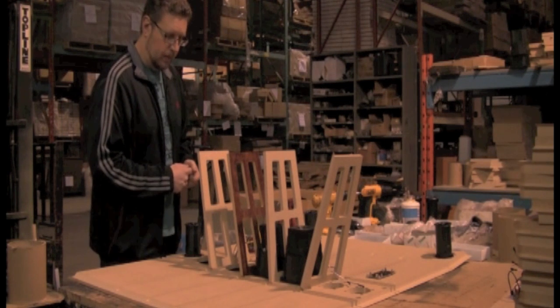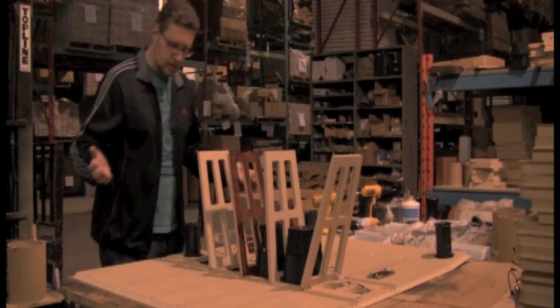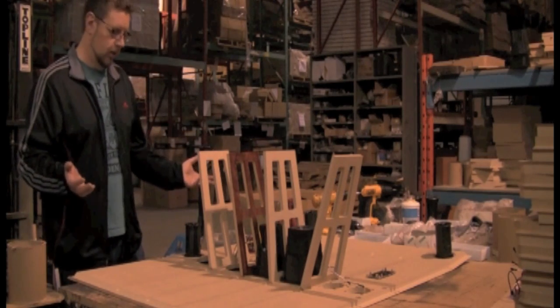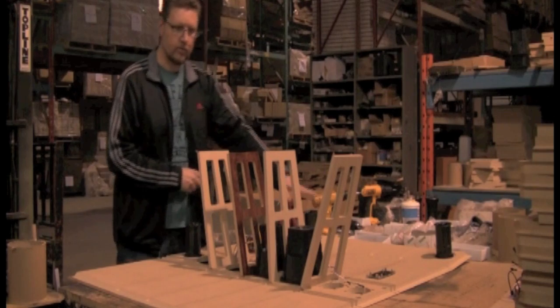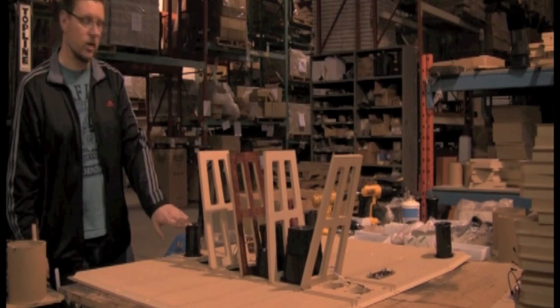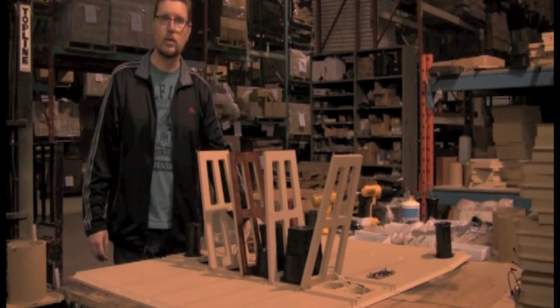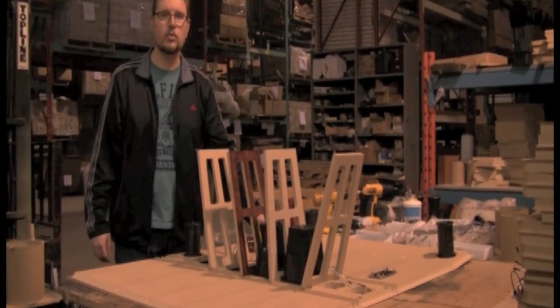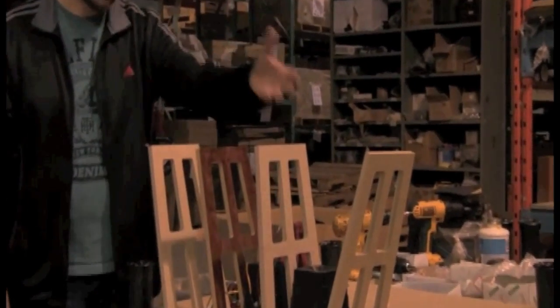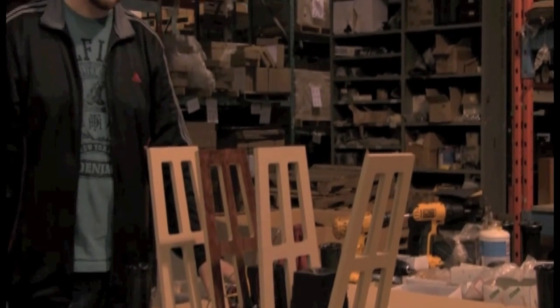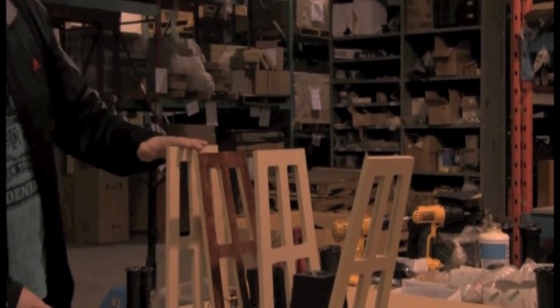So you can see we've got a number of different components in here. We've got ports already mounted. There's two on the back of an M80 and one on the front at the bottom. The crossover network, which divides the frequencies between the different drive units, the woofers, the midranges, and the tweeters, is mounted here.